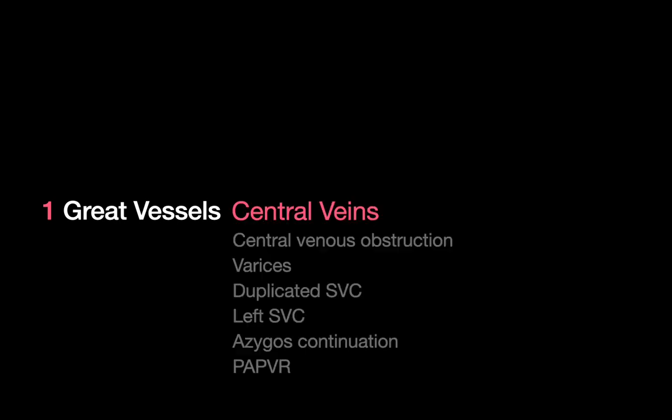The great vessels are the vascular conduits that carry blood directly to and from the heart — that's the central veins, the pulmonary arteries, and the thoracic aorta. Let's start upstream with the central veins. There are six central venous conditions I'd like you to be familiar with.